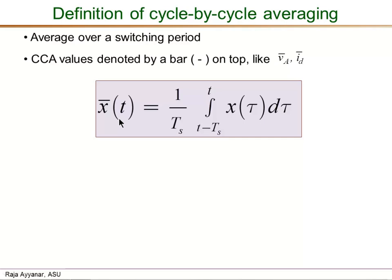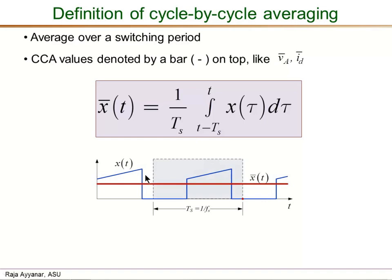So x-bar of t, which is the CCA value of time-varying quantity x(t) at time t, is given by this expression. It requires us to take the integral from the instant t minus Ts — where Ts is the switching period — up to the current time t, and divide by Ts to get the average value. In essence, we are taking the average of the waveform over one complete period just prior to the point at which we want the CCA value. That is a straightforward definition, and this picture helps to further illustrate this concept.